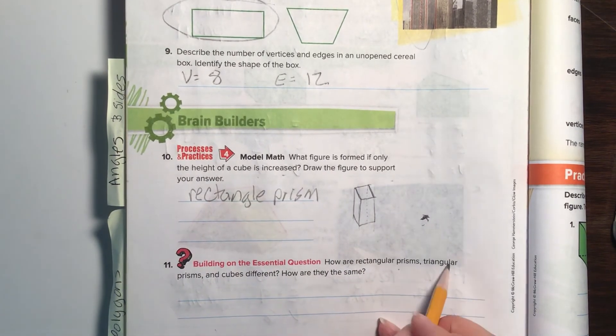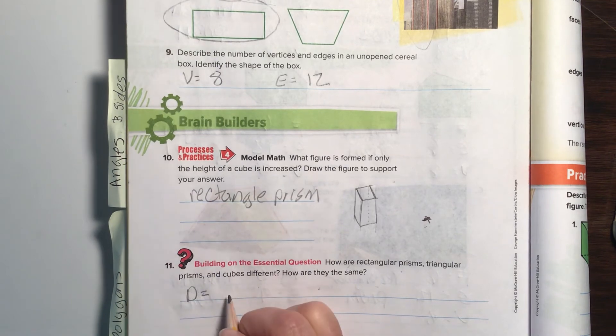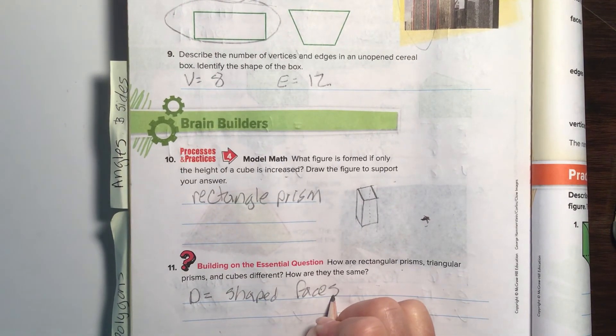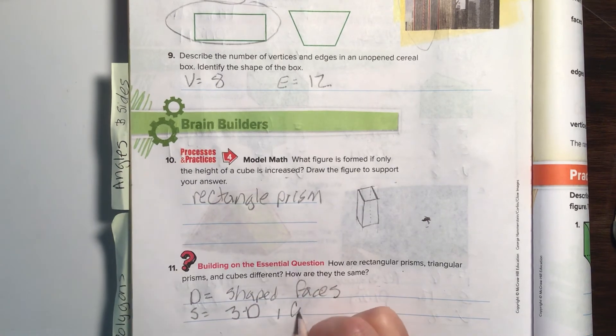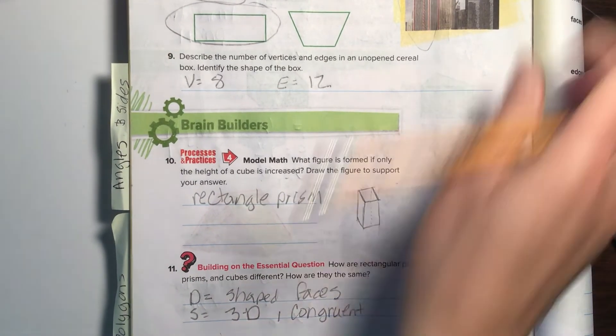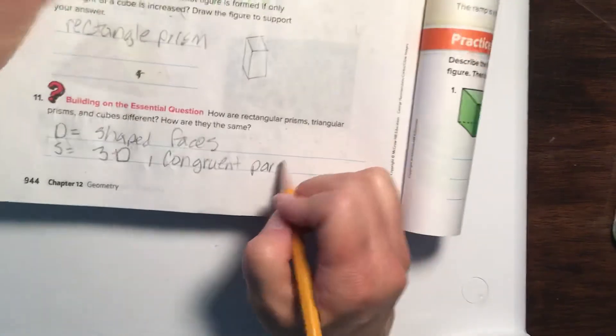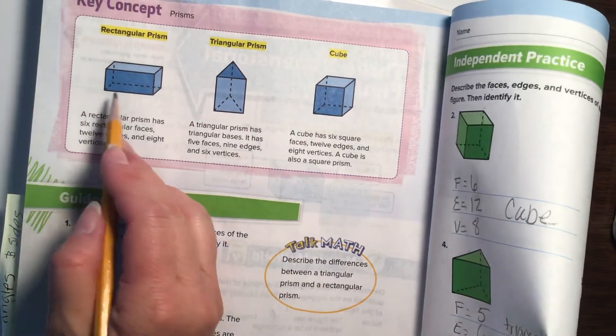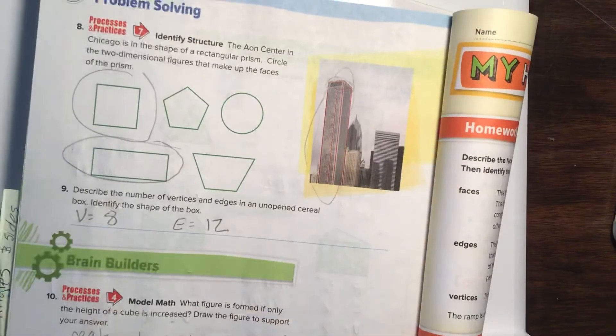Okay, how are rectangular prisms, triangular prisms, and cubes different, and how are they the same? They are different—just put D for different. They have different shaped faces. Different shaped faces. And they are the same because they're all three-dimensional with congruent, congruent—make sure you spell that right—congruent parallel bases. Which I just want to look at this and say, different shape, different shape, different shape, but they all have—the bases have parallel lines. Base straight, there's the parallel lines. Alright, that concludes your guided practice.